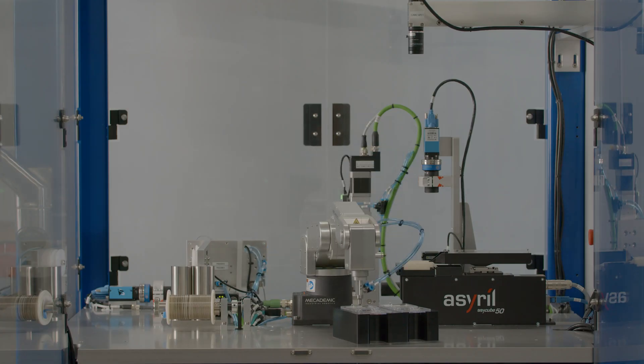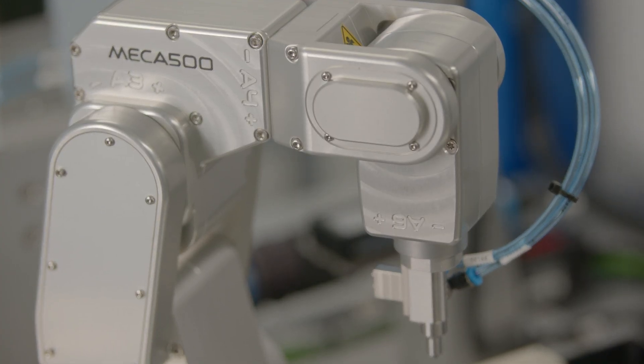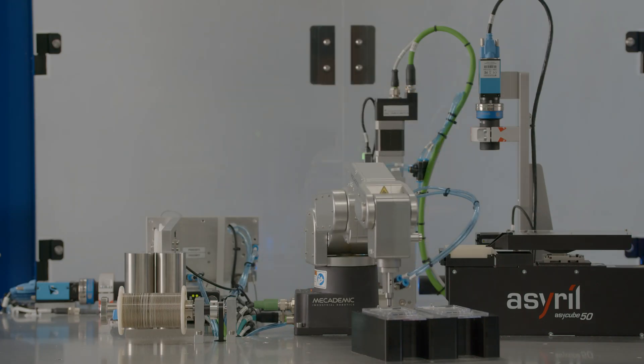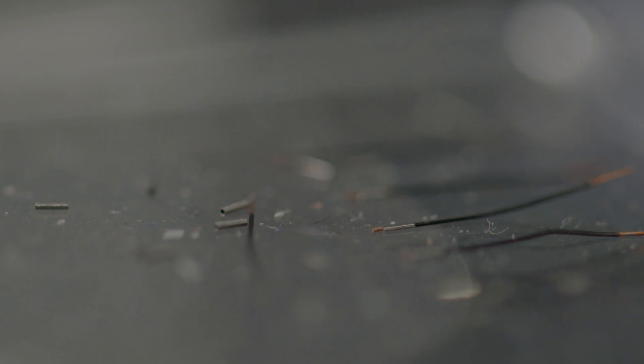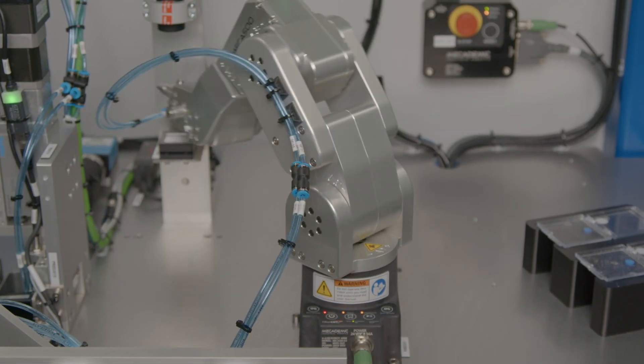We're right on the edge of some of the latest and greatest technology. That Mecca 500 robot is one of the smallest six-axis, most precise robots. It's down around sub two microns in position.